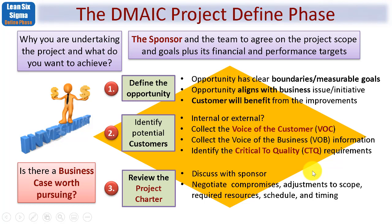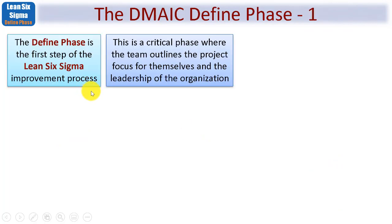Third, we need to review the project charter. The sponsor will normally provide a draft or initial project charter, and it's part of the Define Phase to refine it. We'll want to discuss this with the sponsor — negotiating compromises such as constraints and assumptions, adjustments to scope, required resources including people and budget, schedule, timeframe, and key timing aspects such as when each of the DMAIC phases starts and completes.